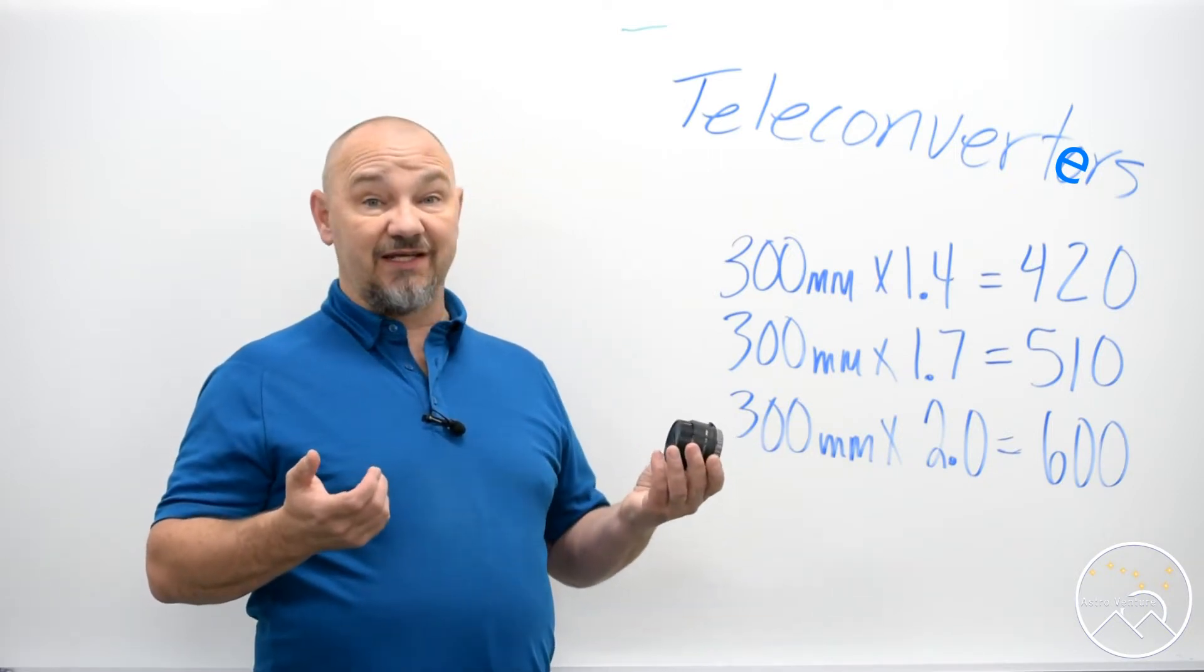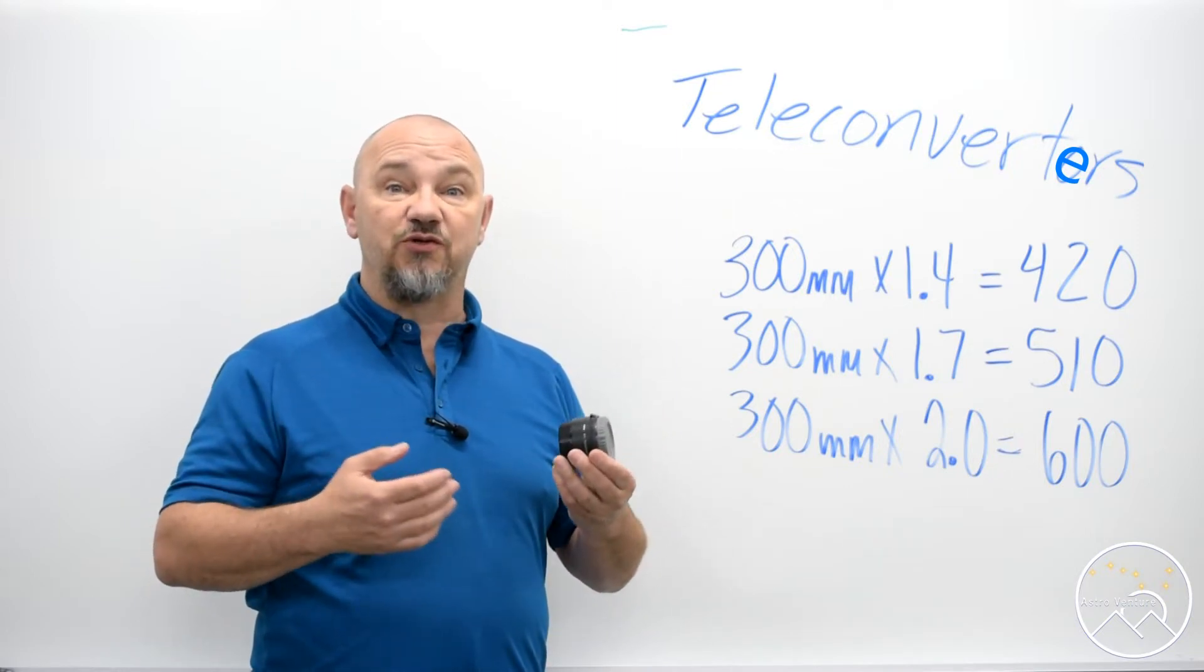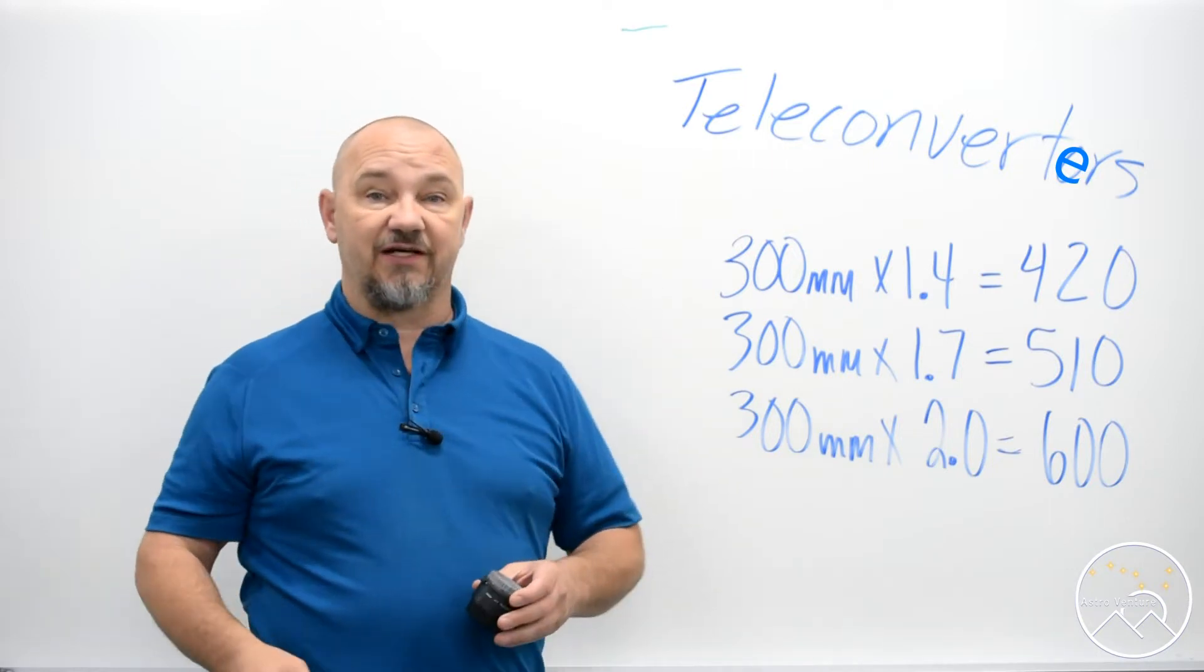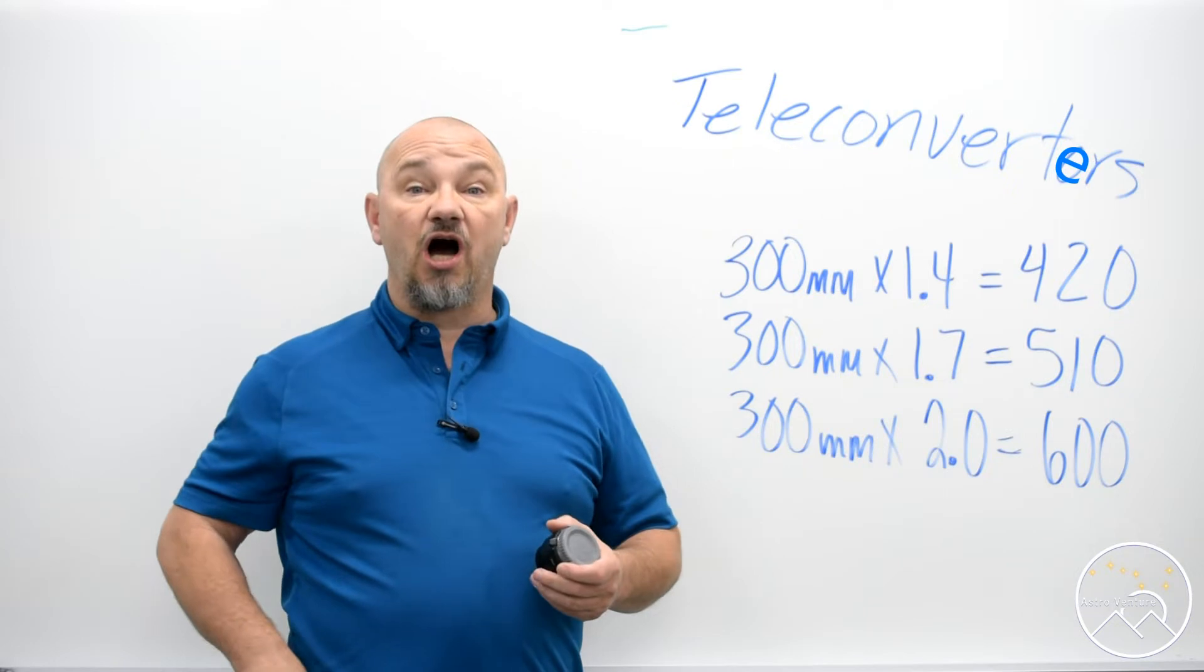Now they're really easy to use, it simply just fits in like a lens does but in between your lens and your camera body and this is great that you get these extra focal length distances but there are also some cons to it.